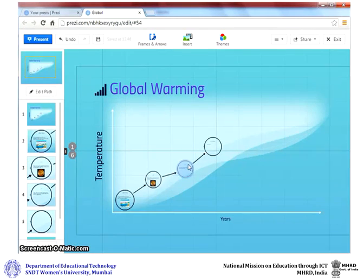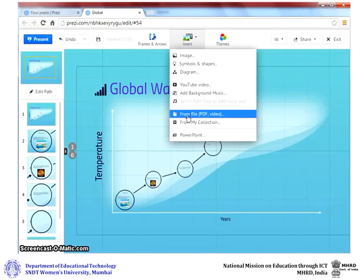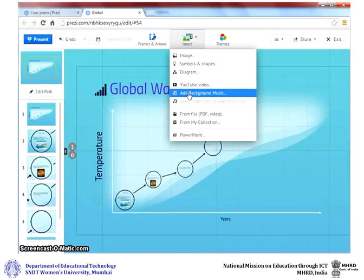Like text and images, you can also add video and audio files to your presentation. Click on insert. Click on symbols if you want to insert symbols. Click on PDF files or video files if you want to insert a PDF or a video. Or you could add background music.